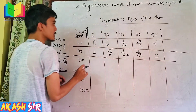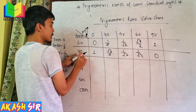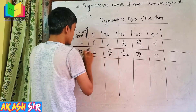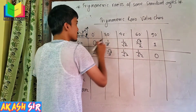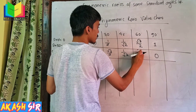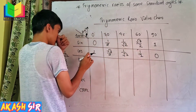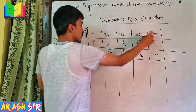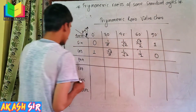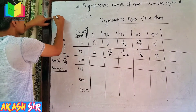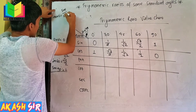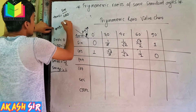This is how we calculate the cosine values. Cos 0 value is 1. Cos 30 value is root 3 by 2. Cos 45 value is 1 by root 2. Cos 60 value is 1 by 2. Cos 90 value is 0.